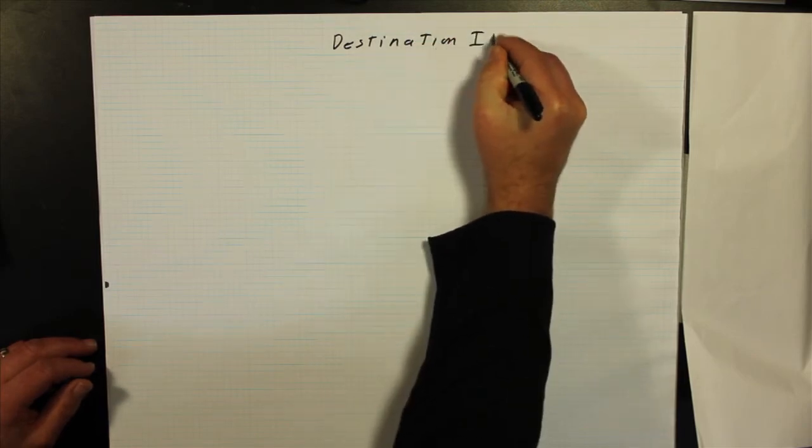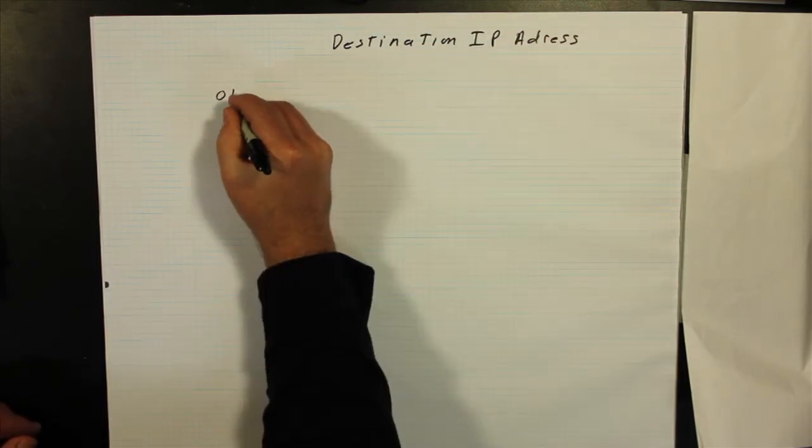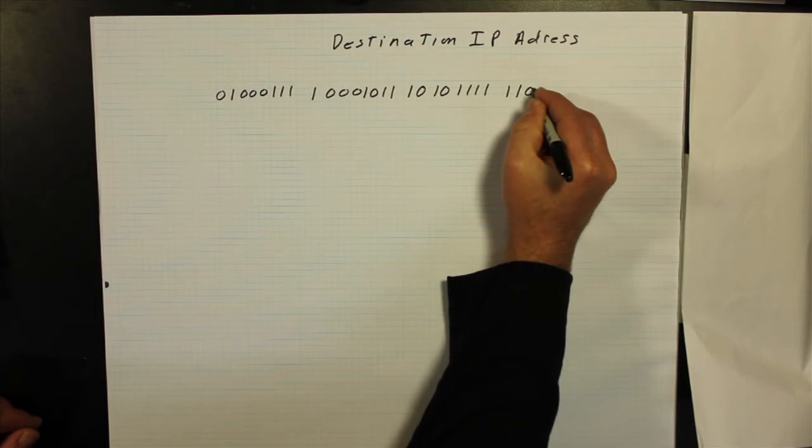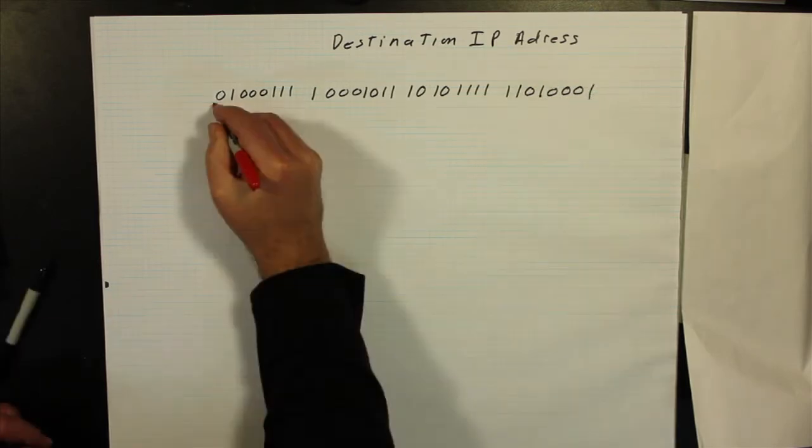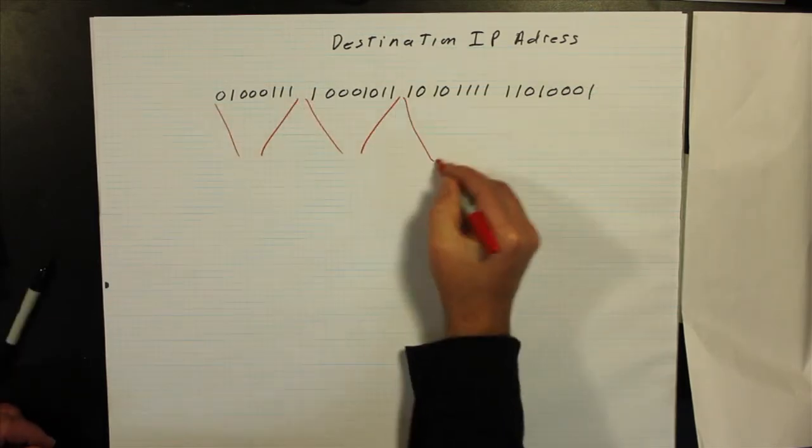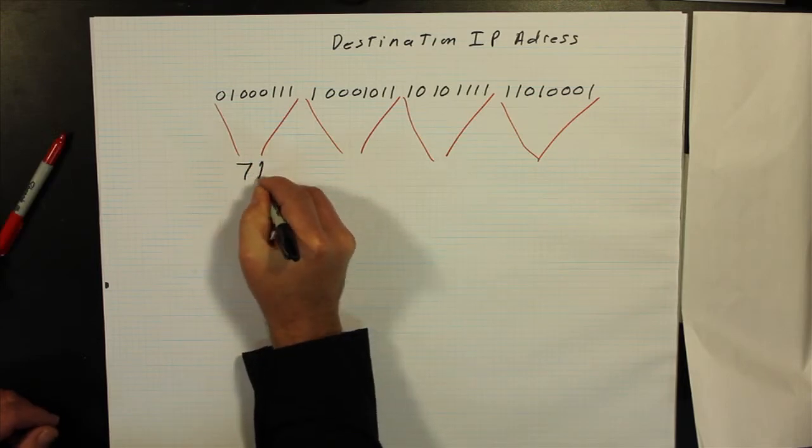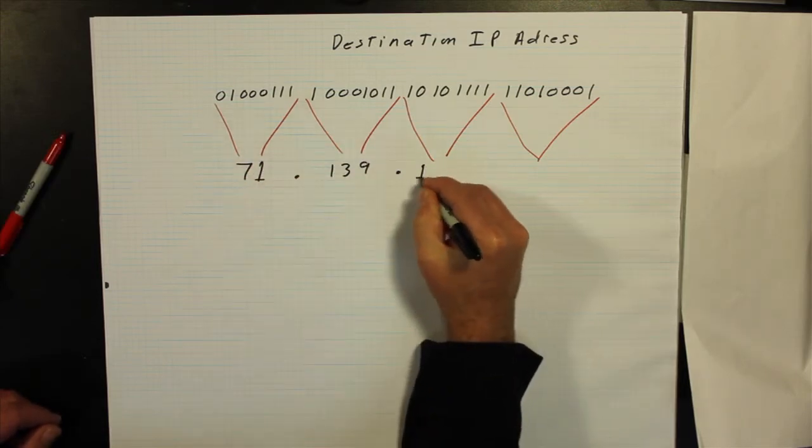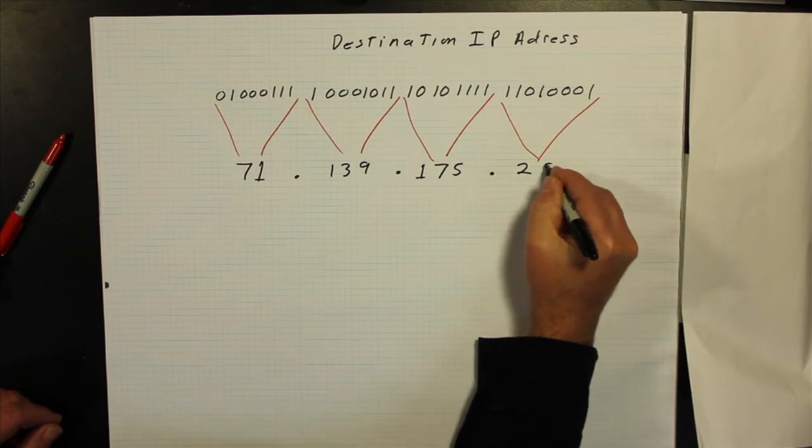And of course, the destination IP address is the destination for this IP packet. Again, it's in the form of IP4 addressing, which supplies 4.3 billion addresses.